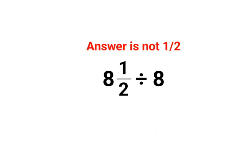Welcome everyone. Today we are going to understand why this entire division is not giving you the answer as just half. Because this looks so easy, right? 8 and 1 by 2 divided by 8.